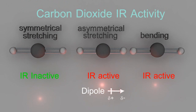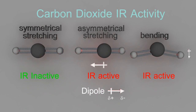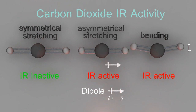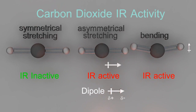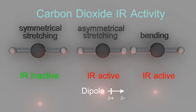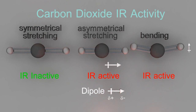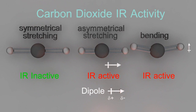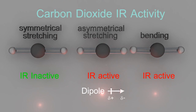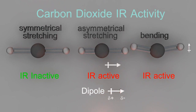So how can you tell if a motion is infrared active or infrared inactive? The long and short of it is: if the motion causes the dipole to change, then it is infrared active. For carbon dioxide, the infrared inactive motion is the symmetrical stretching — the dipole of the carbon dioxide doesn't change when it undergoes symmetrical stretching.